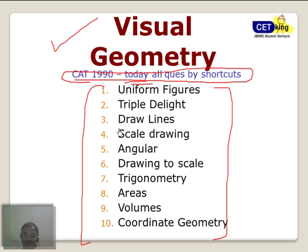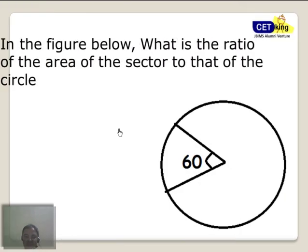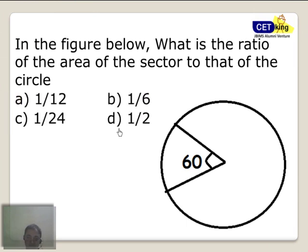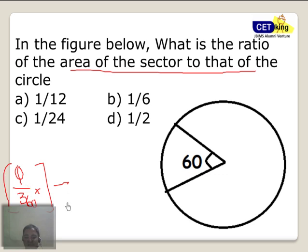Now I am going to give you just the first sample. We can talk about uniform figures — a uniform figure is basically any figure that is uniform in area. First example: find the ratio of the area of the sector to that of the circle. If we remember the formula, area of a sector is theta over 360 into the area of the circle. So looking at this angle: 60 by 360 equals 1 by 6.